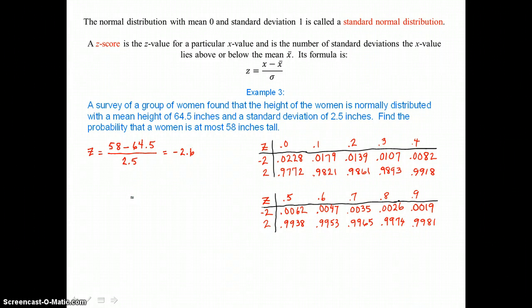Okay, and now we use the z-score and the table to determine the answer to our question, the probability that a woman is at most 58 inches tall. So I'm going to look at negative 2.6. So here's negative 2, and here's .6. So if I follow that row and this column, I'm going to find my percentage, my percentage of .0047 for the probability that a woman is at most 58 inches tall.